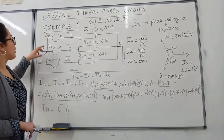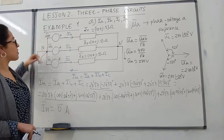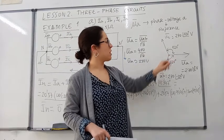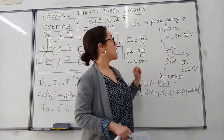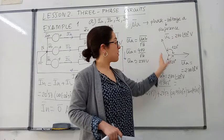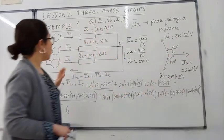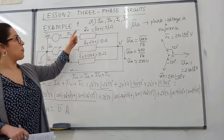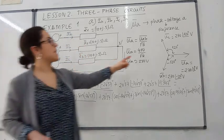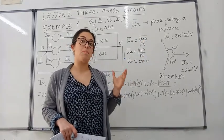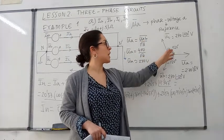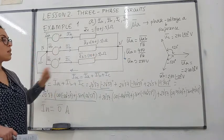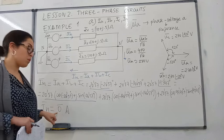That is true when we have a symmetrical system where the phase voltages are shifted 120 degrees, and also when we have a balanced load. So in that situation, when the load is balanced and the voltages are equal in absolute value and shifted 120 degrees, then the current in the neutral conductor is equal to zero.